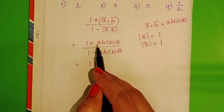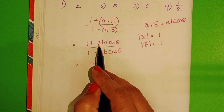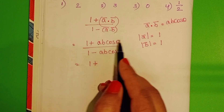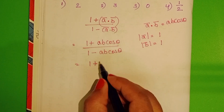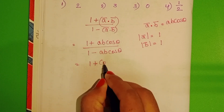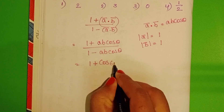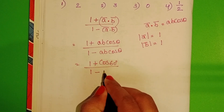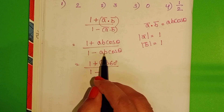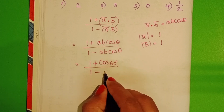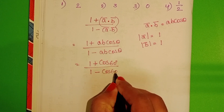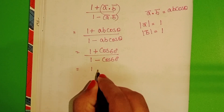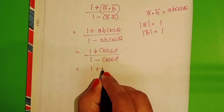The magnitude of a is 1 and magnitude of b is also 1. The given angle is 60 degrees. So we substitute: 1 + 1×1×cos60° in the numerator, and 1 - 1×1×cos60° in the denominator. The value of cos60° is 1/2.